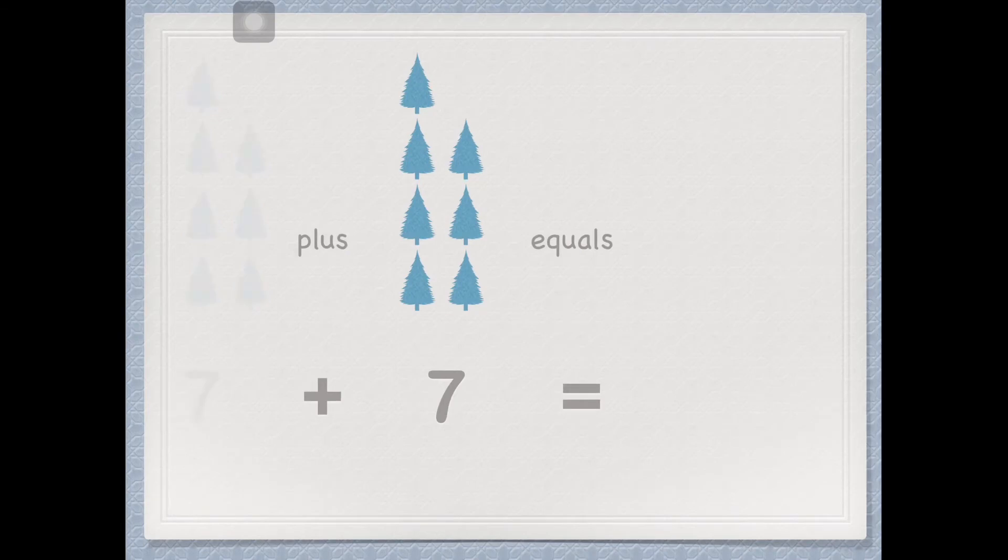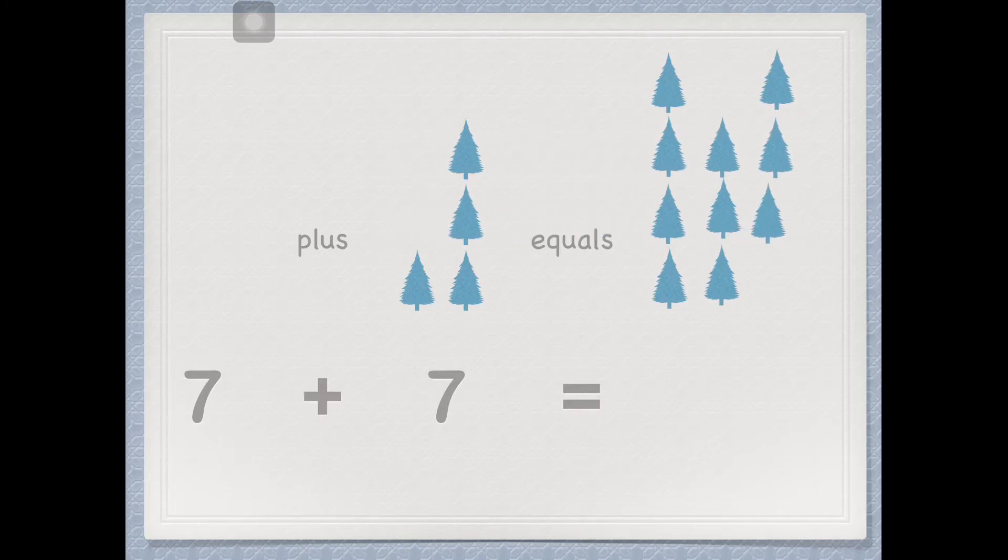7 plus 7 equals 7, 8, 9, 10, 11, 12, 13, 14.